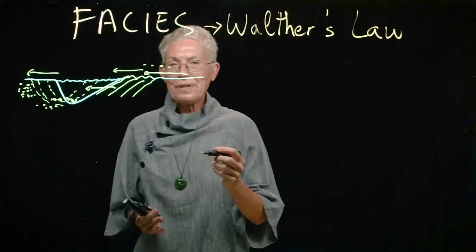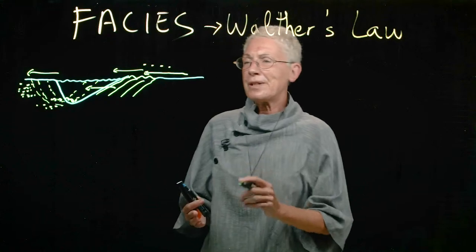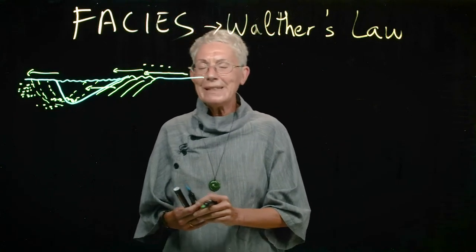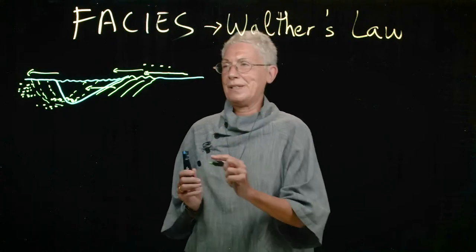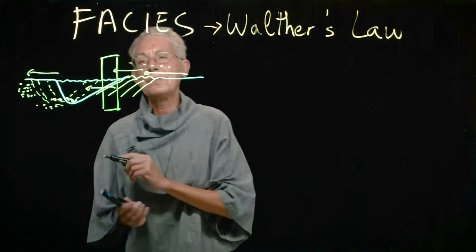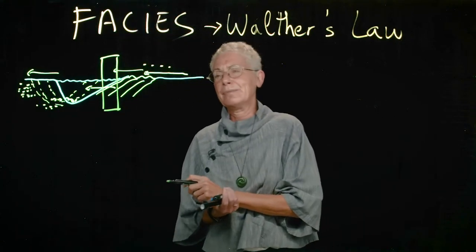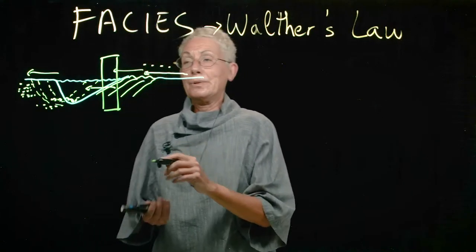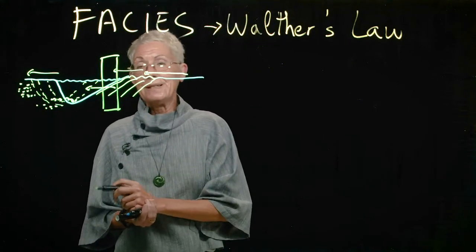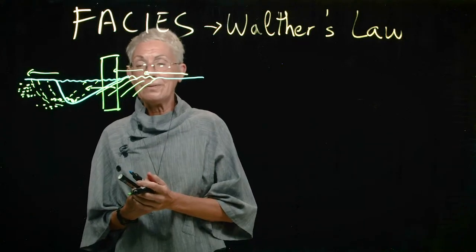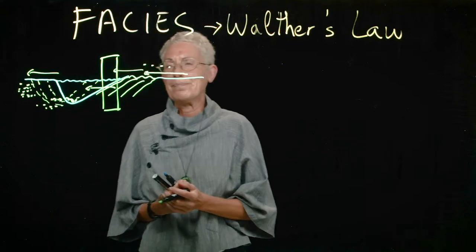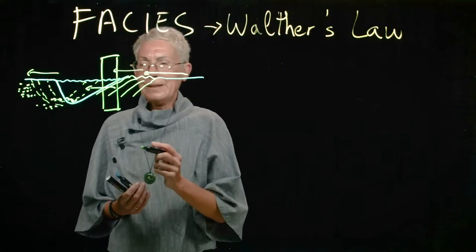So what does this mean? If you, for example, find in an outcrop only a slice of it, like a tiny little bit like this, because this is the only thing you can find. Or you have a core, and in your core, it's very tiny. And from the core, you have to try and understand what the fluvial system was.